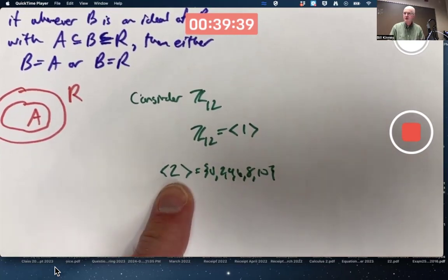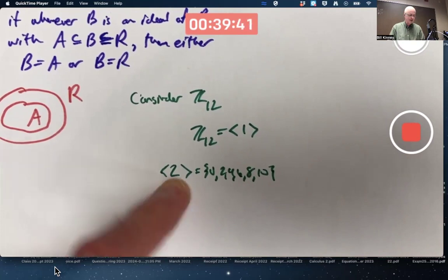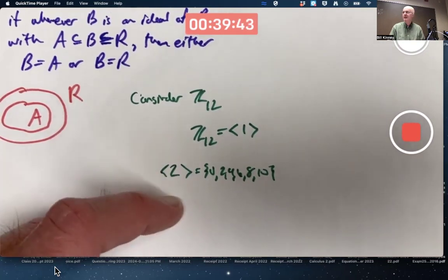Because if you think about ring multiples of 2, multiply any element of the ring Z12 by 2, you're going to get a multiple of 2. 1 times 2 is 2, 2 times 2 is 4, 3 times 2 is 6, 4 times 2 is 8, 5 times 2 is 10, 6 times 2 is back to 0. 7 times 2, 14 mod 12 is back to 2.